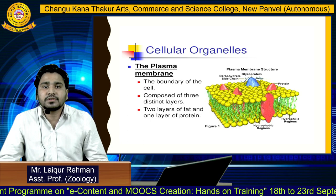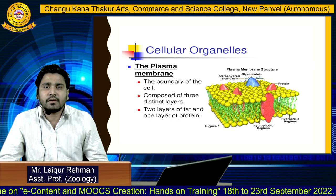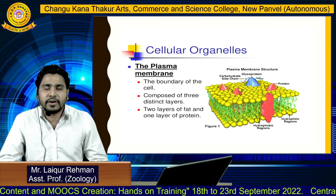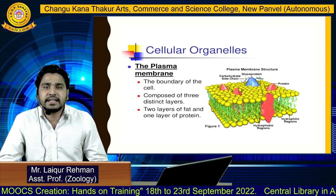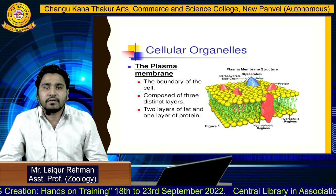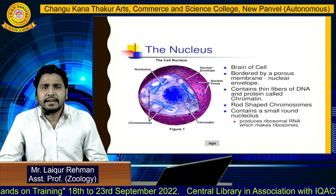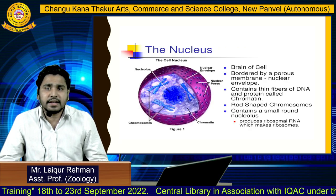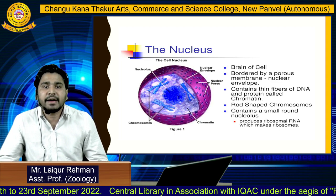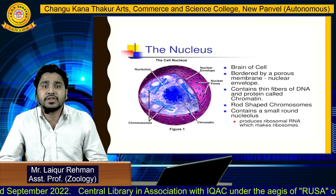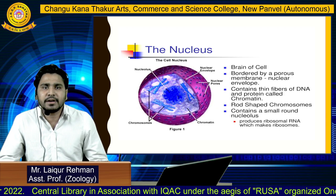The plasma membrane is composed of three distinct layers: two layers of fat and one layer of protein. In this diagram you can very clearly see the three distinct layers of the plasma membrane. Next is the nucleus — the brain of the cell. It is bordered by a porous membrane called the nuclear envelope.